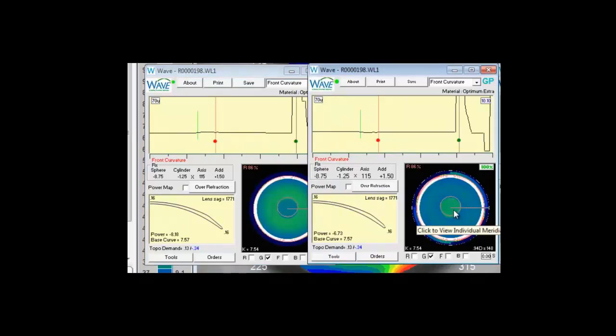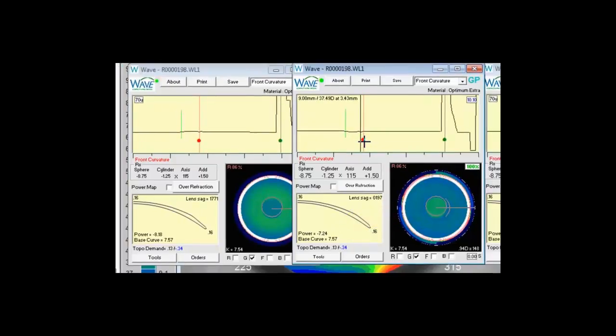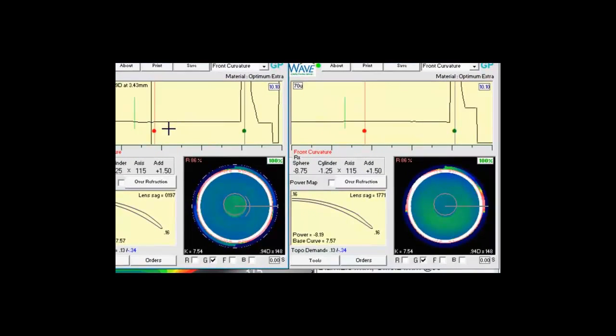Center near is going to be the exact opposite. You'll see centrally we have now a minus 670. And as we get to this line we drop down and the minus power gets higher. So we have center near and the distance correction increases as we move further away from the periphery.